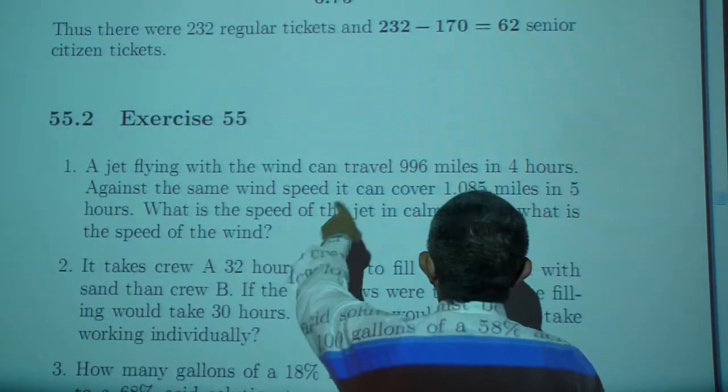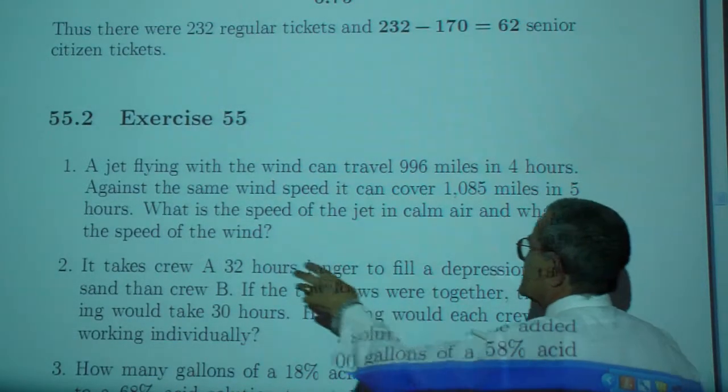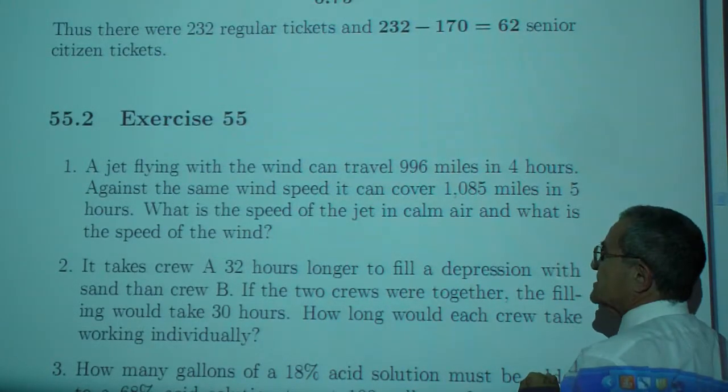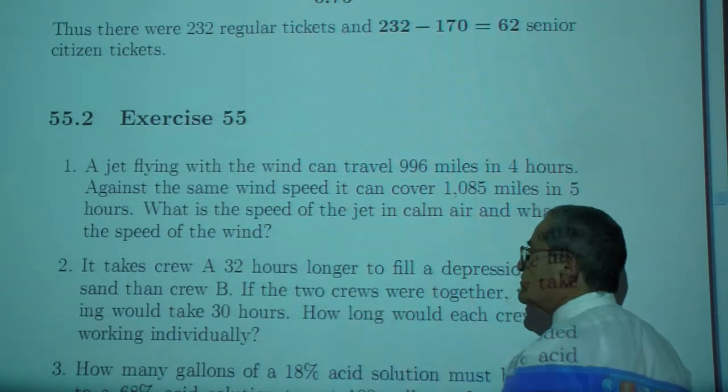A jet flying with a wind can travel 996 miles in 4 hours. Against the same wind speed, it can cover 1,085 miles in 5 hours. What is the speed of the jet in calm air and what is the speed of the wind?